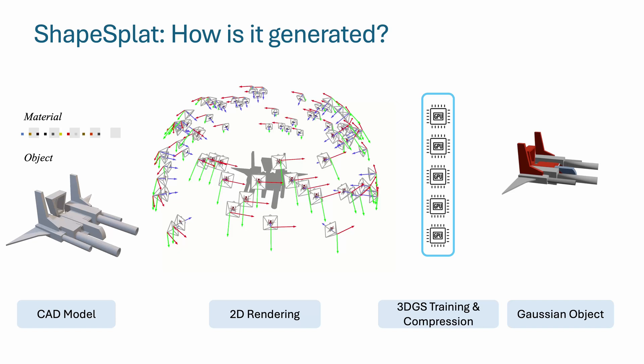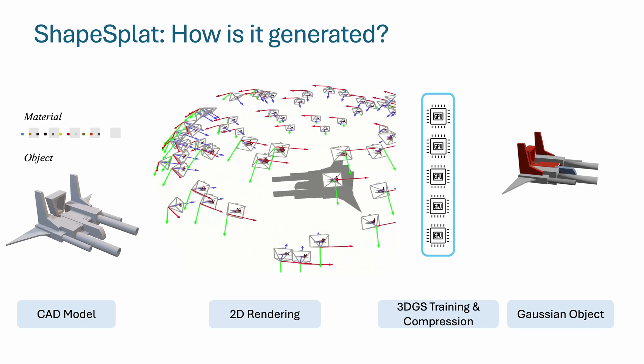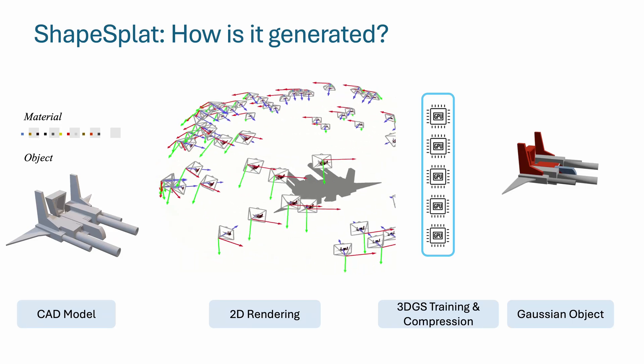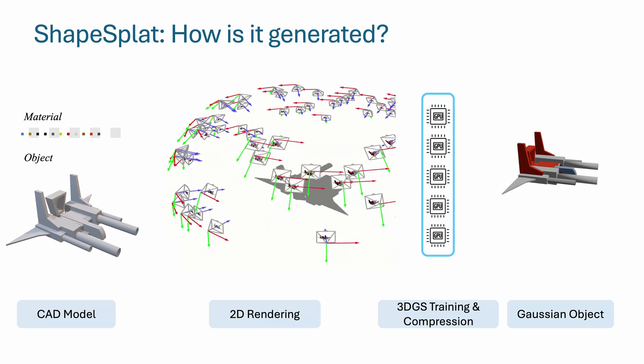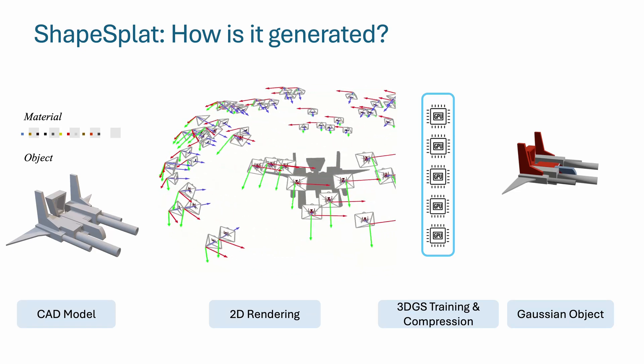ShapeSplat is based on commonly used 3D object datasets, ShapeNet and ModelNet. To generate the datasets, we start with CAD models, which are then rendered into 2D images from uniformly spaced viewpoints. Once we have the image pose pairs,